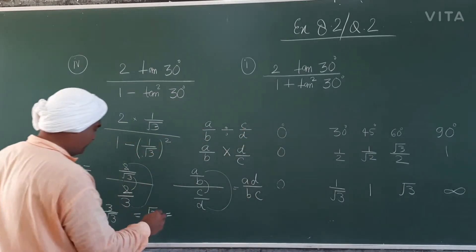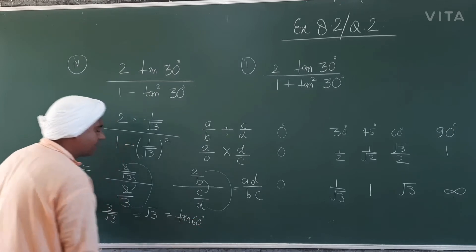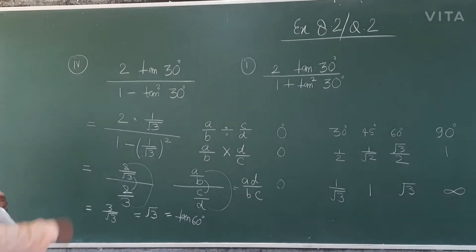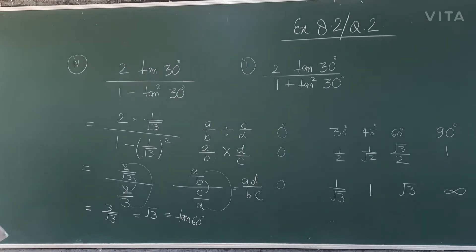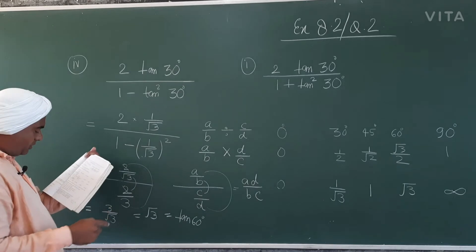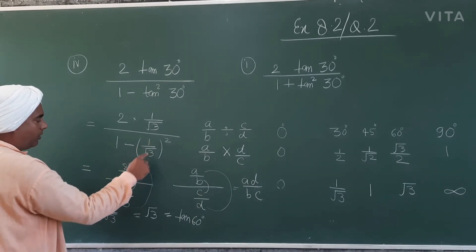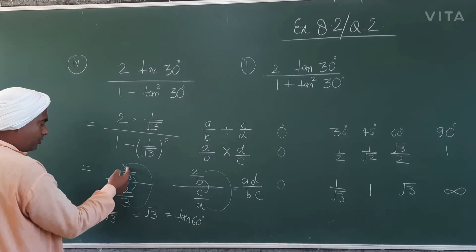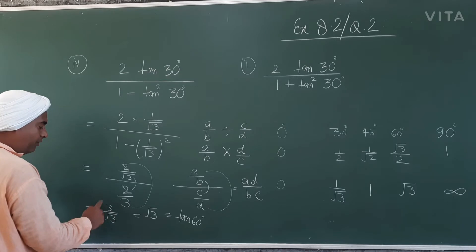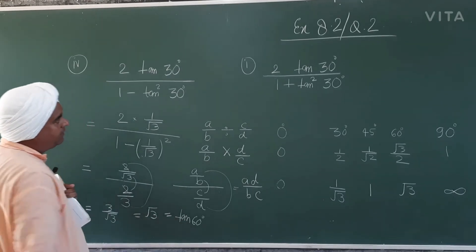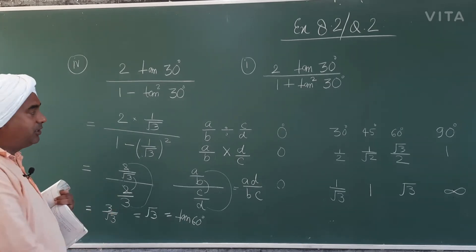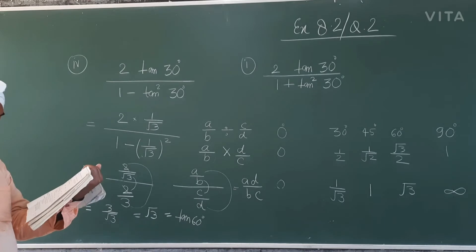So we get √3, and √3 is the value of tan(60°). Let me verify: tan values are 0, 1/√3, 1, √3, infinite — yes, that is correct. So 1/3 in denominator gives 2/3, and 2/√3 divided by 2/3 gives 2/√3 × 3/2. The 2s cancel and 3/√3 = √3. So the answer is tan(60°). Check option C — that is the answer.